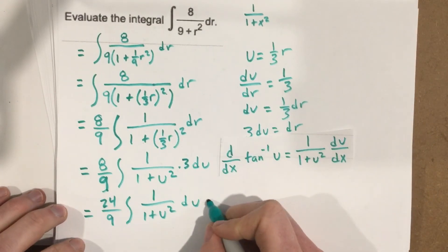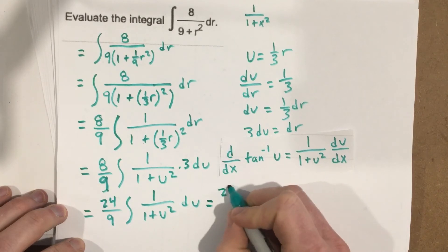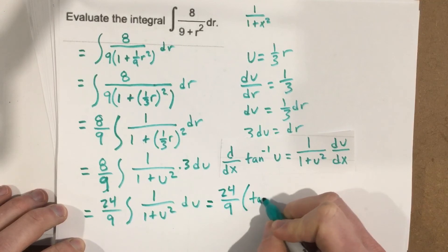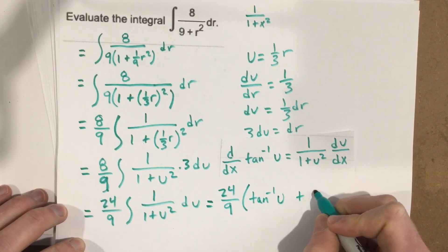And I'm going to say that this equals then 24 over 9 tangent inverse u plus c.